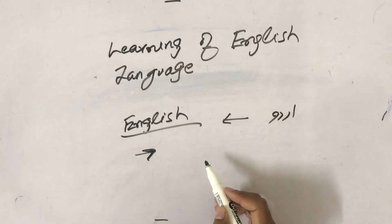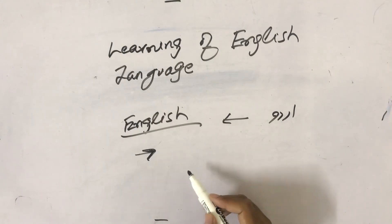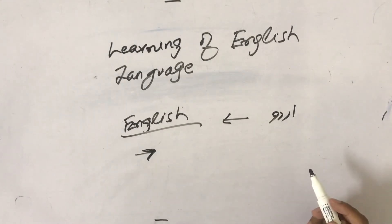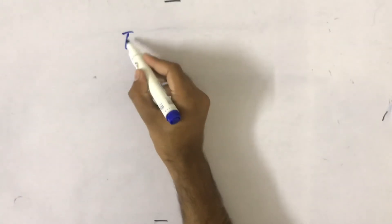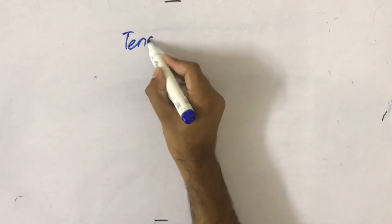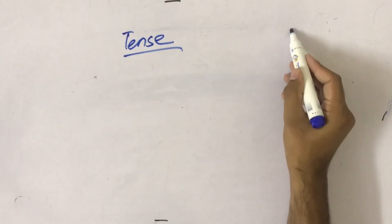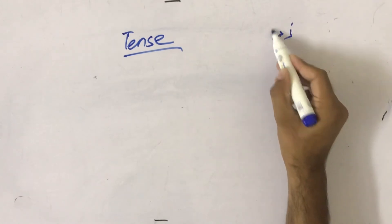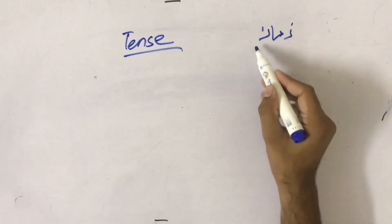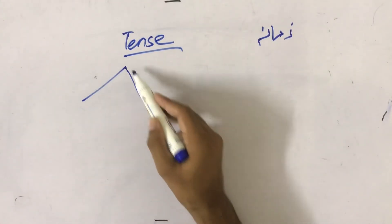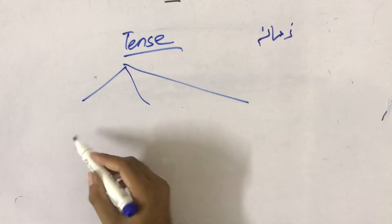So, English for learning, and for these tenses. Tense — in Urdu means tense. There are three tenses.